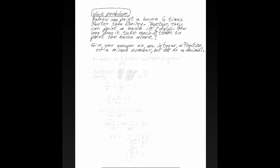Hi. This is your teacher, Barbara Rademacher, and we're going to do a more involved work problem. Andrew can paint a house six times faster than Bailey. Together they can paint a house in seven days. How long does it take each of them to paint the house alone? Now this is a little more difficult and it's also a little more tricky. Read the first sentence. Andrew can paint a house six times faster than Bailey.